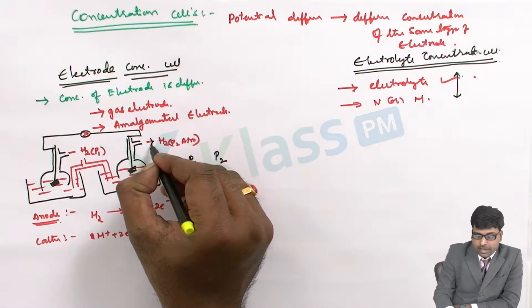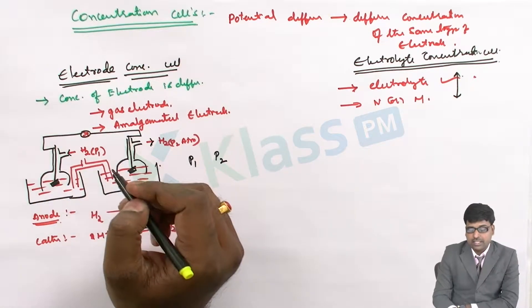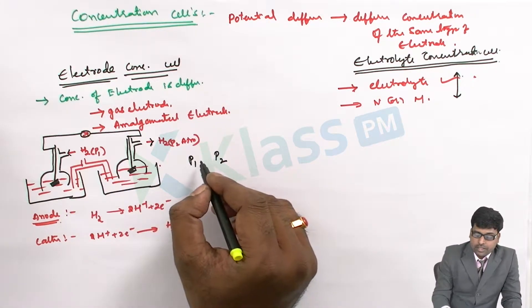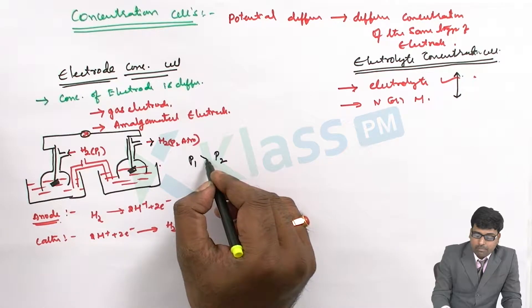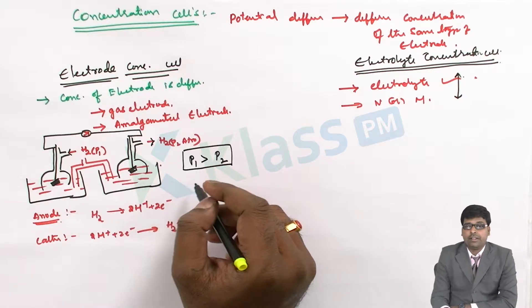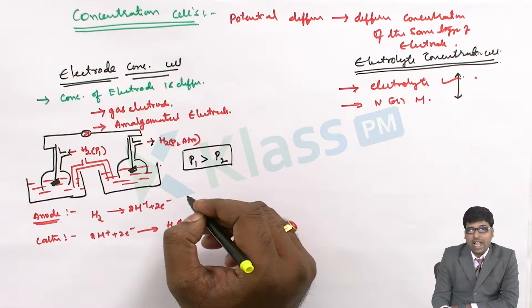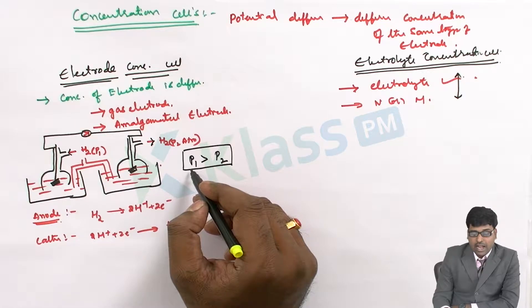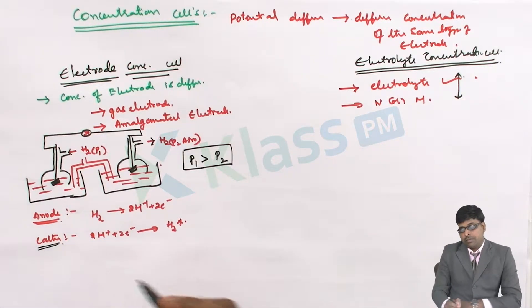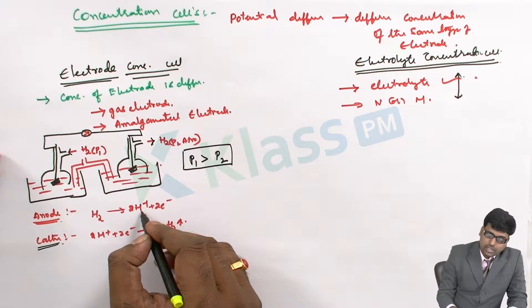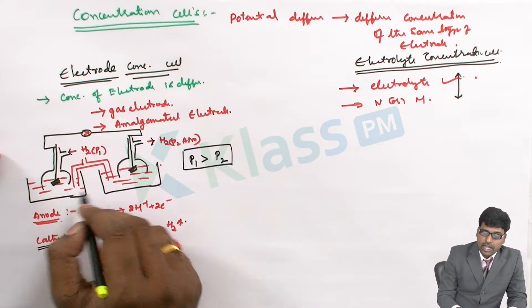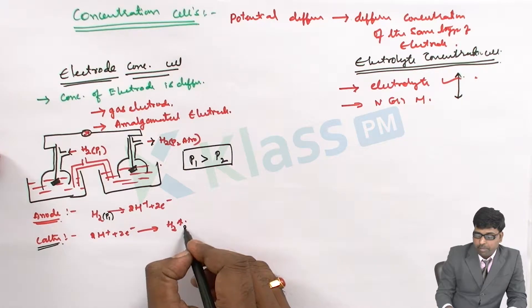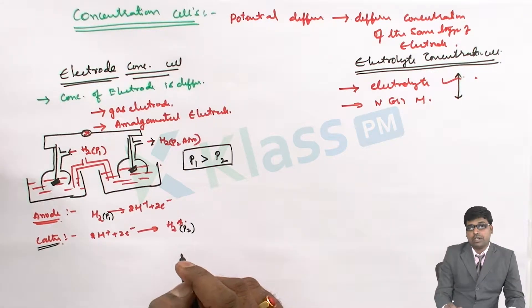At the cathode, H₂ gas is liberated, and at the anode, H₂ gas is fed into the hydrogen electrode. Where the pressure is higher at the electrode, that will act as the anode. Taking the concentrations of H⁺ ions at anode and cathode as the same, we consider P1 and P2 as the concentration variance.